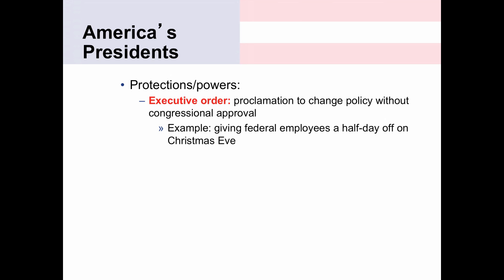One of the more controversial executive orders was regarding the NSA's wiretapping program. During President Bush's administration, he signed an executive order that did not require congressional approval—Congress did not even know the president had done this, because this was intended as an anti-terrorism program. President Bush felt that letting the public and Congress know about this program could undermine national security, so only a few members of Congress were told about its existence.